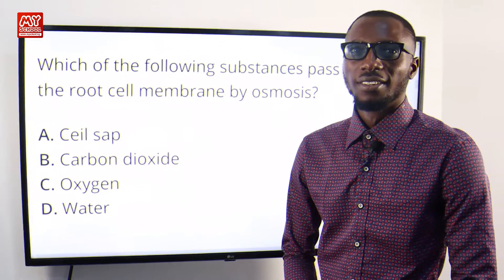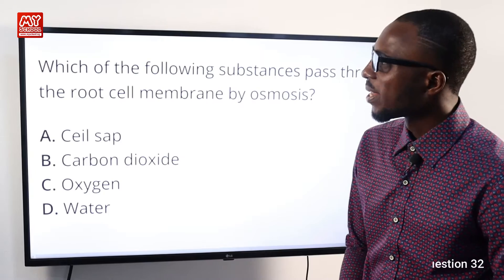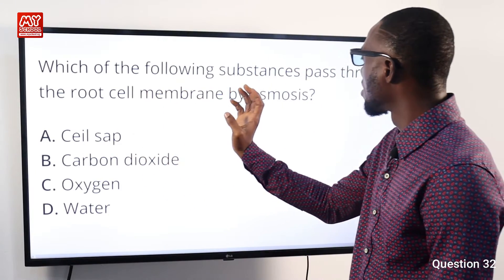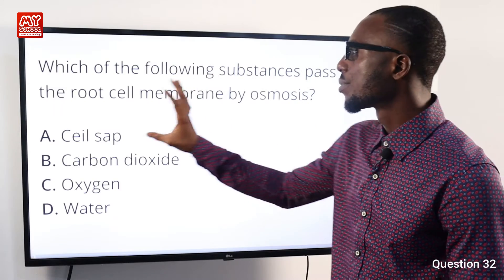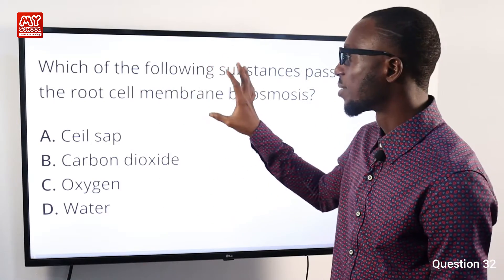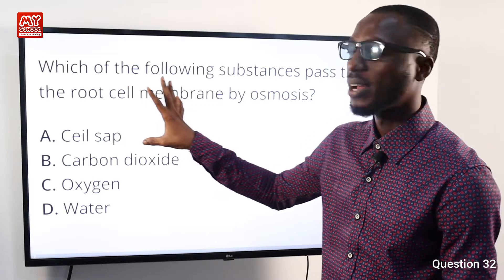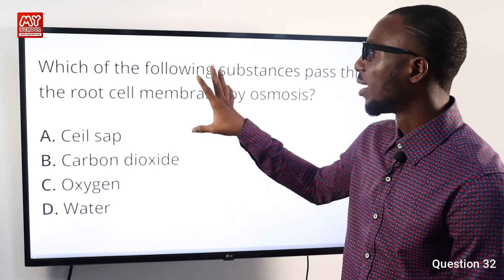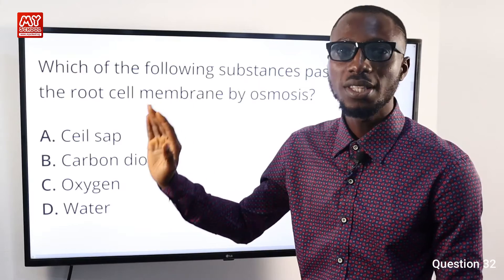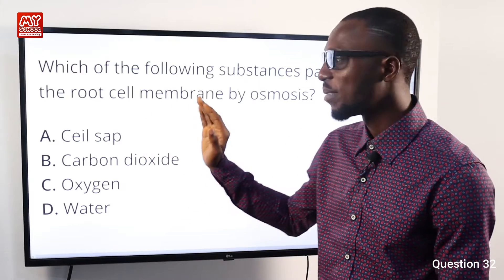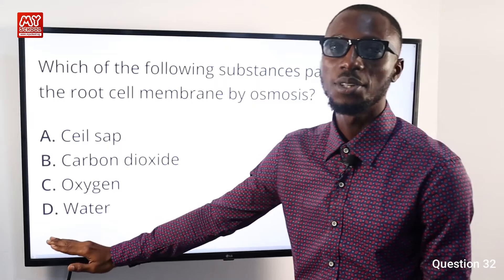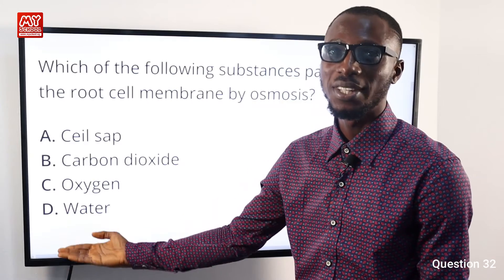Question 32: Which substances pass through the root cell membrane by osmosis? The substance that moves through the root cell by osmosis is water. Going through the options, we find water in option D, so option D is correct.